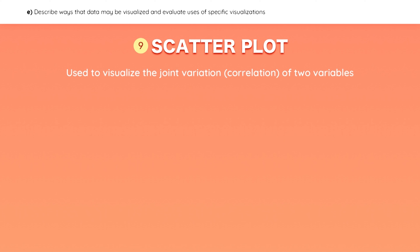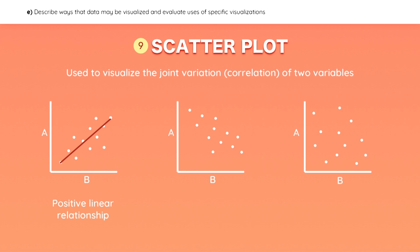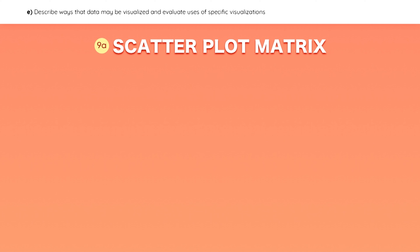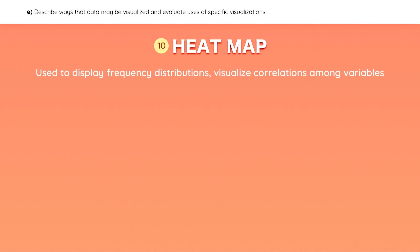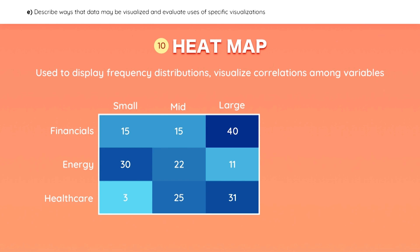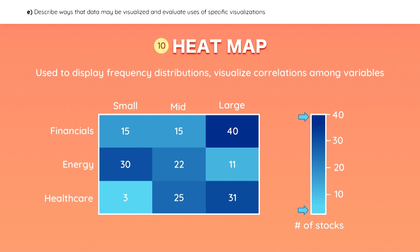A scatter plot is used to visualize the joint variation or correlation of two variables. For example, we can show a positive linear relationship between stock A and stock B, a negative linear relationship, or no relationship between variables. A scatter plot matrix allows you to visualize many pairs of variables at the same time — here we can see many different relationships between stocks X, Y, H, and F all at once. A heat map displays frequency distributions and can be used to visualize correlations among different variables. What separates a heat map from a regular joint table is that it uses a color spectrum — in this example, dark blue quadrants have the largest number of stocks and light blue quadrants have the lowest.